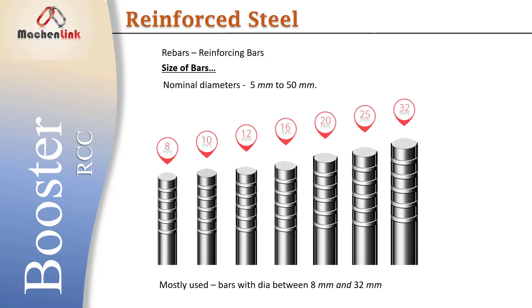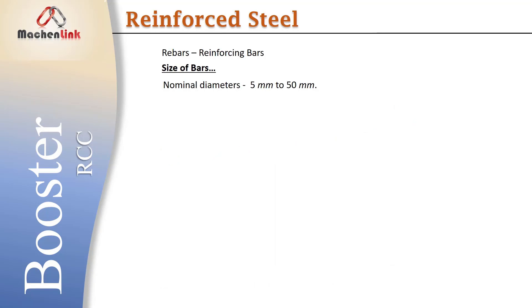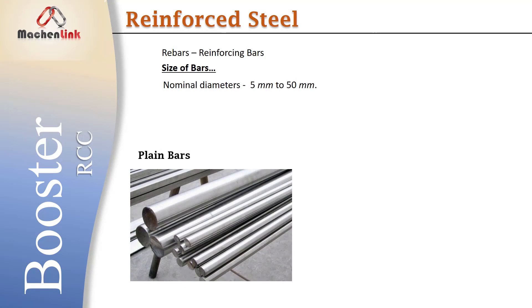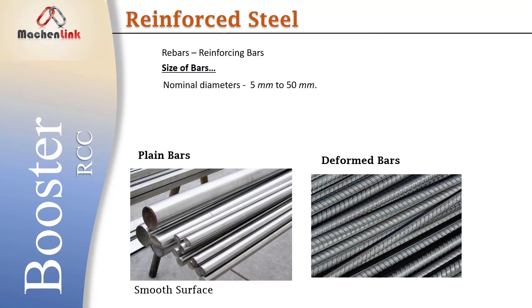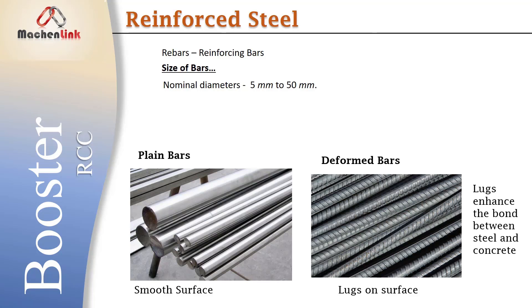Steel bars come in two types based on their surface. The first one is plain bars, which have a smooth surface. The second one are deformed bars, which have a rough surface — these are the ones which have lugs on their surface. These lugs are provided to enhance the bond between steel and concrete.